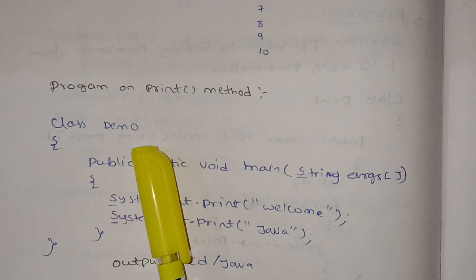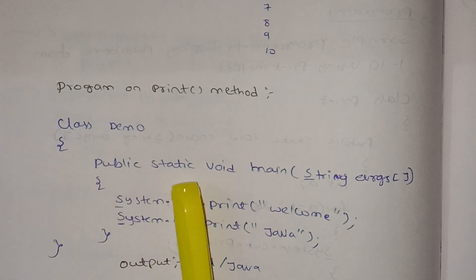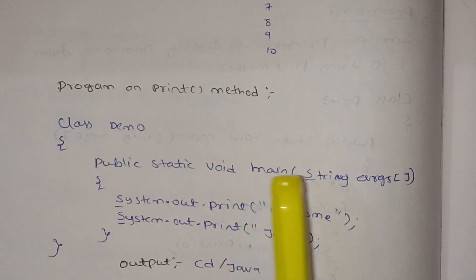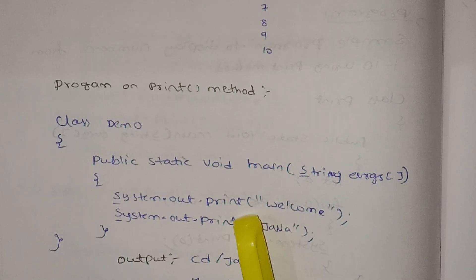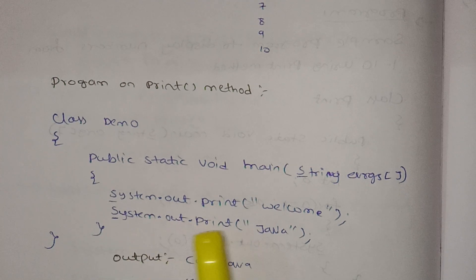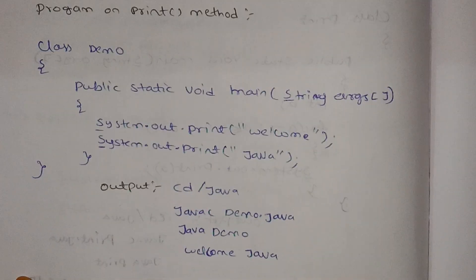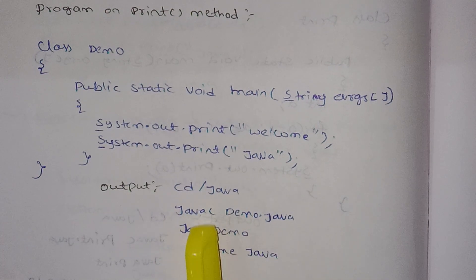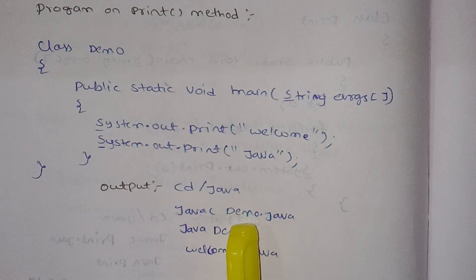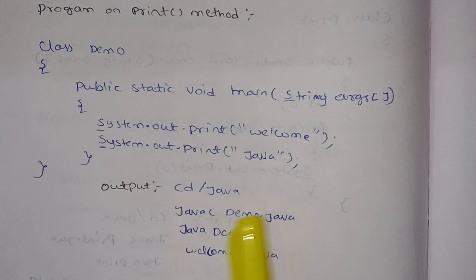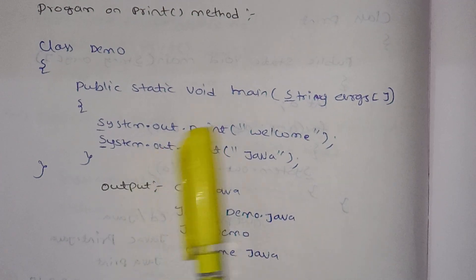Class demo program — here we print using system.out.println. public static void main, then system.out.println to print "java". We compile using: cd forward slash java, then javac demo.java, where the class name is demo.